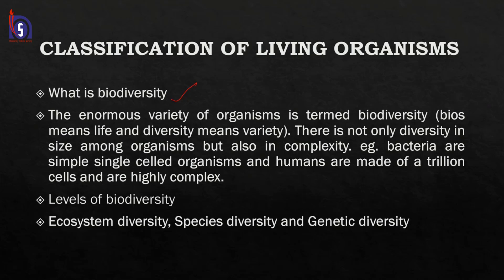There is not only diversity in size among the organisms, but also in complexity. Bacteria is considered one of the simplest unicellular organisms, while highly evolved mammals like humans are very complex organisms present on the planet Earth, having a lot of cells with multitasking nature and high complexity. Biodiversity can be seen at three levels: ecosystem diversity, species diversity, and genetic diversity.